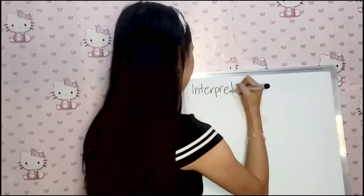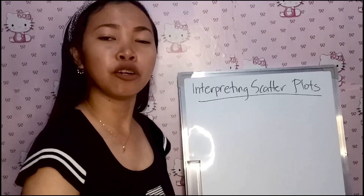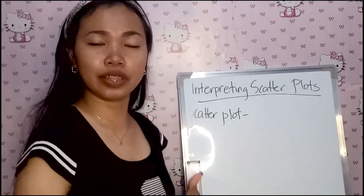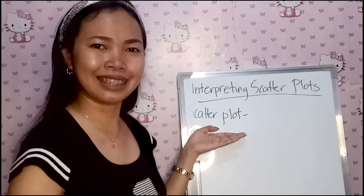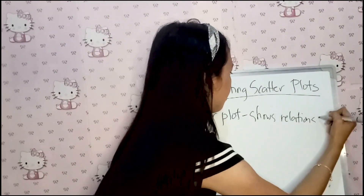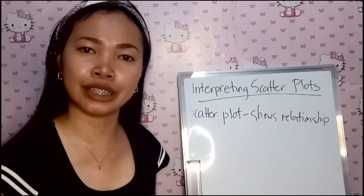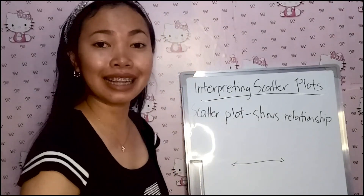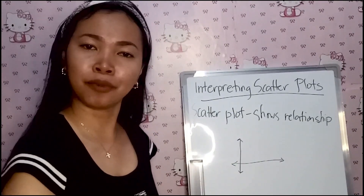How do we interpret scatterplots? First, let us define what a scatterplot is. The most useful graph for displaying the relationship between two quantitative variables is a scatterplot. A scatterplot shows the relationship between two quantitative variables measured for the same individuals. The values of one variable appear on the horizontal axis, while the other values appear on the vertical axis. Each individual in the data appears as a point on the graph.